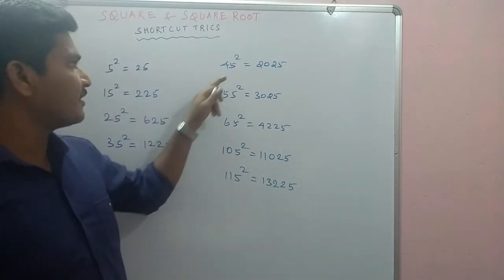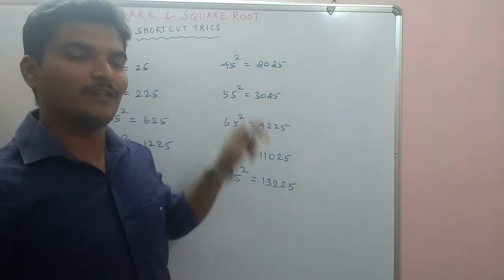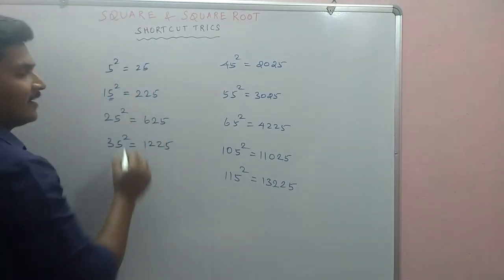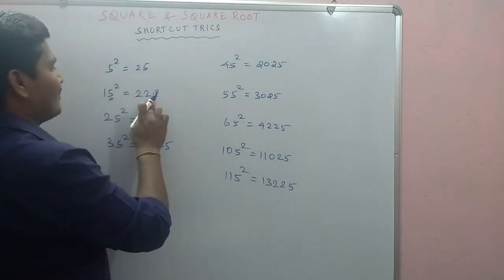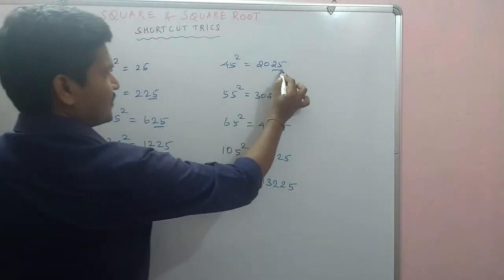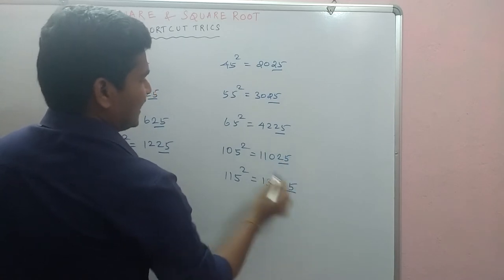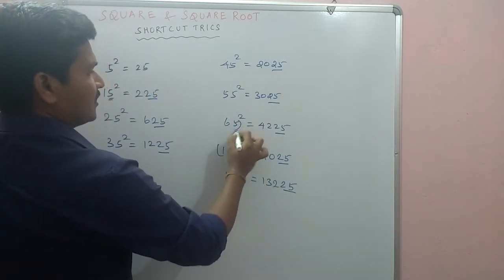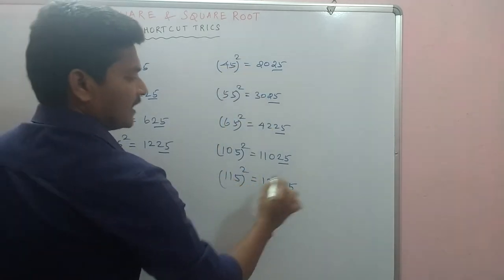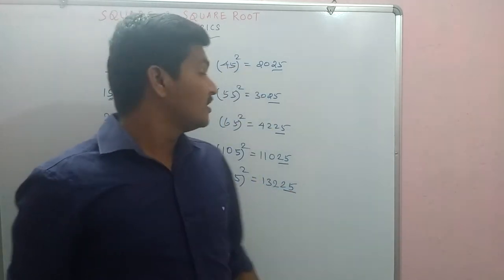If the number ending is 5, square is calculated using a pattern. Like, if the number ending is 5, square would be calculated this way.